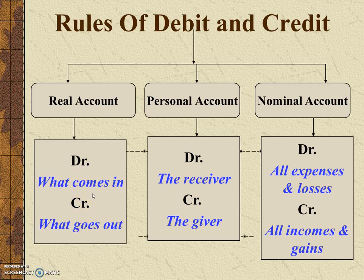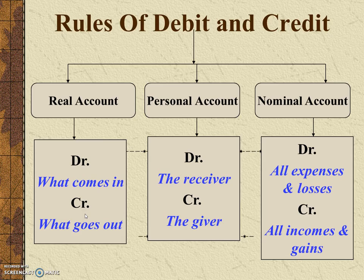Since real accounts belong to the property of the business, if an asset is coming into the business — that is, when we are purchasing that particular asset — it will be debited. If we are selling it, it will be credited. Cash is also an asset, so if we are paying cash, it is going out and we will credit the cash. For personal accounts, the rule is: debit the receiver and credit the giver.